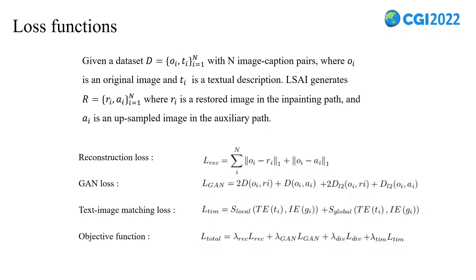Let's take a look at the loss functions of the LSAI model. First, we use the reconstruction loss to penalize the restored images with the original images. There is also the GAN loss, which is defined by the two discriminators we implemented. Furthermore, the text-image matching loss mentioned in the MP module is adapted to refine the generated images with textual descriptions, where G denotes the generated images in two passes. Combining the KL divergence loss, the objective function of LSAI can be summarized as L total.